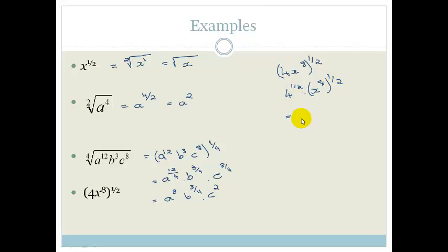That is 4 to the half times x to the 8, all to the half. 4 to the half is the same as saying 2 squared to the half. And what do you do here? When you're crossing across the brackets, you multiply. So it becomes x to the 8 over 2. This becomes 2 to the 2 times a half is 1, so it's just 2, and then back comes x to the 4. Okay, so that's not too tricky.